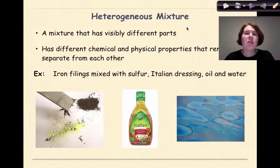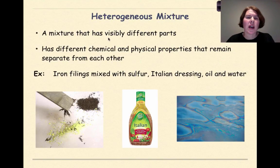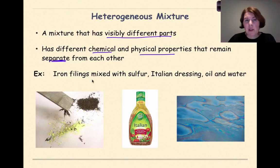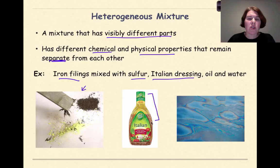A heterogeneous mixture, on the other hand, is a mixture that has visibly different parts, has different chemical and physical properties that remain separate from each other. So examples of this might be iron filings mixed with sulfur. So this image right here, I have two different elements mixed together, but if I have a magnet, I can separate the two of them. Another example that you might have in your house is something like Italian dressing, where we can see basically right here the separation between these two liquids coming together. Same thing over here when we see oil and water. We can see that these two substances are not going to mix together, and they are separate from each other.